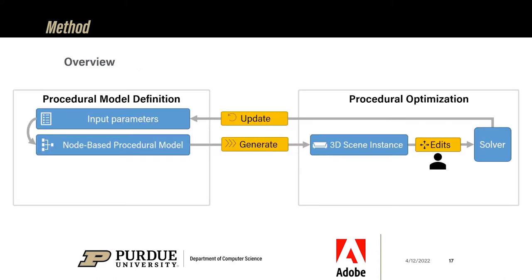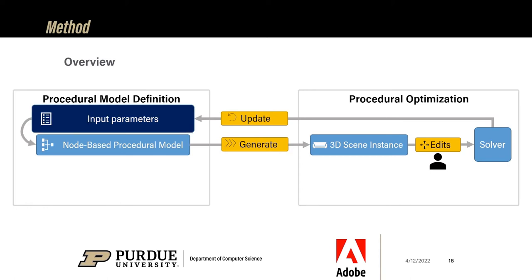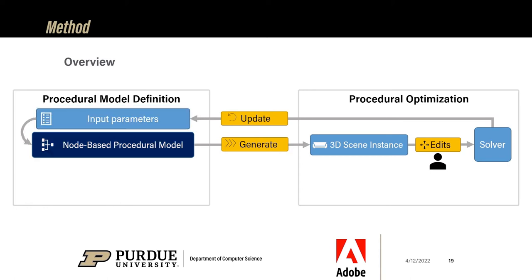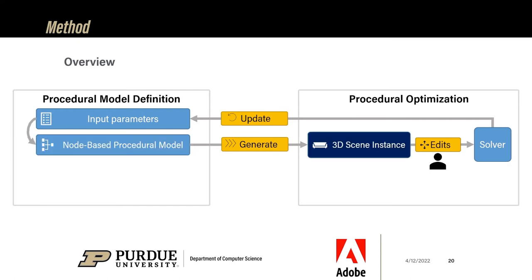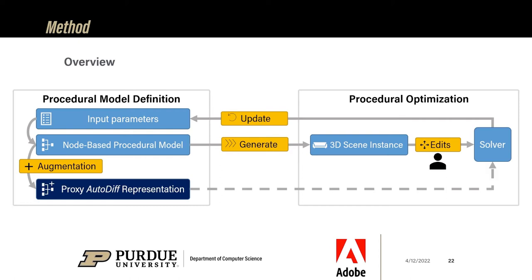Here is an overview of our system when editing the procedural model. It works in a cycle: given the input parameters and the definition of a procedural model, we generate the corresponding 3D model. Then the user makes a modification on the 3D model, and our system tries to match the edits by updating the input parameters. What is new is that in parallel to the procedural graph, we have a differentiable representation that accelerates optimization when matching user edits.